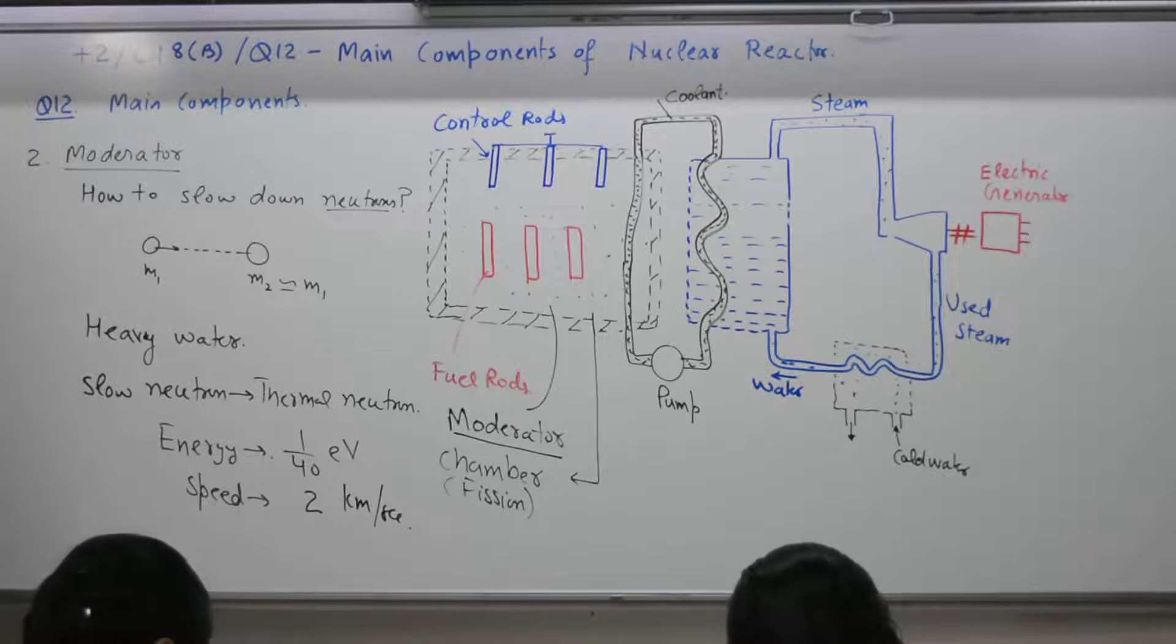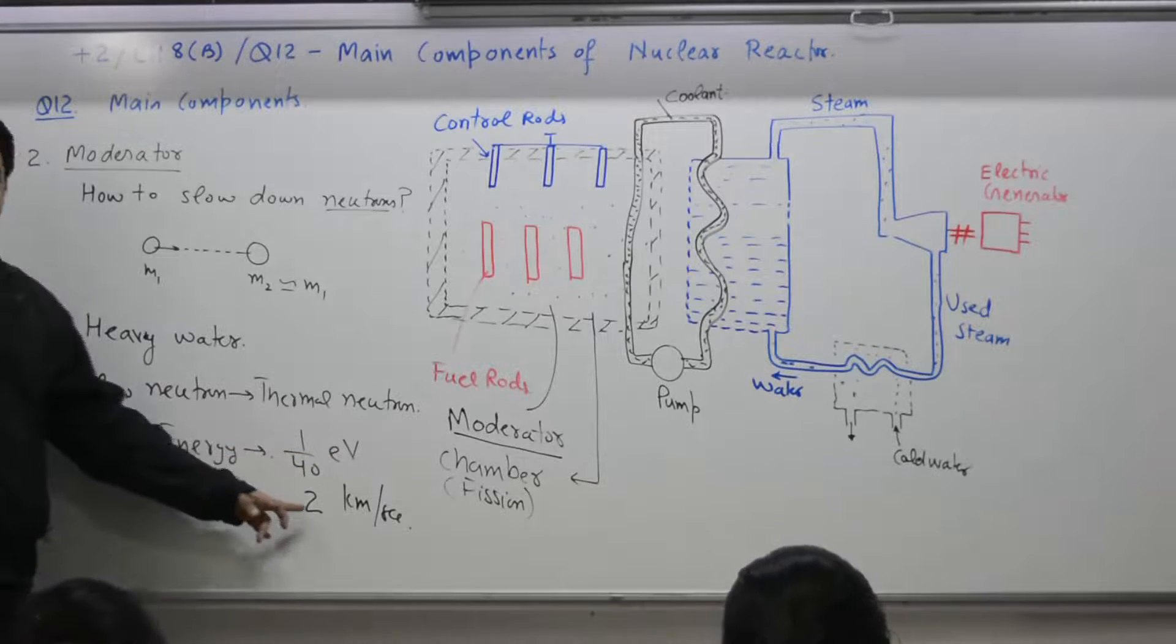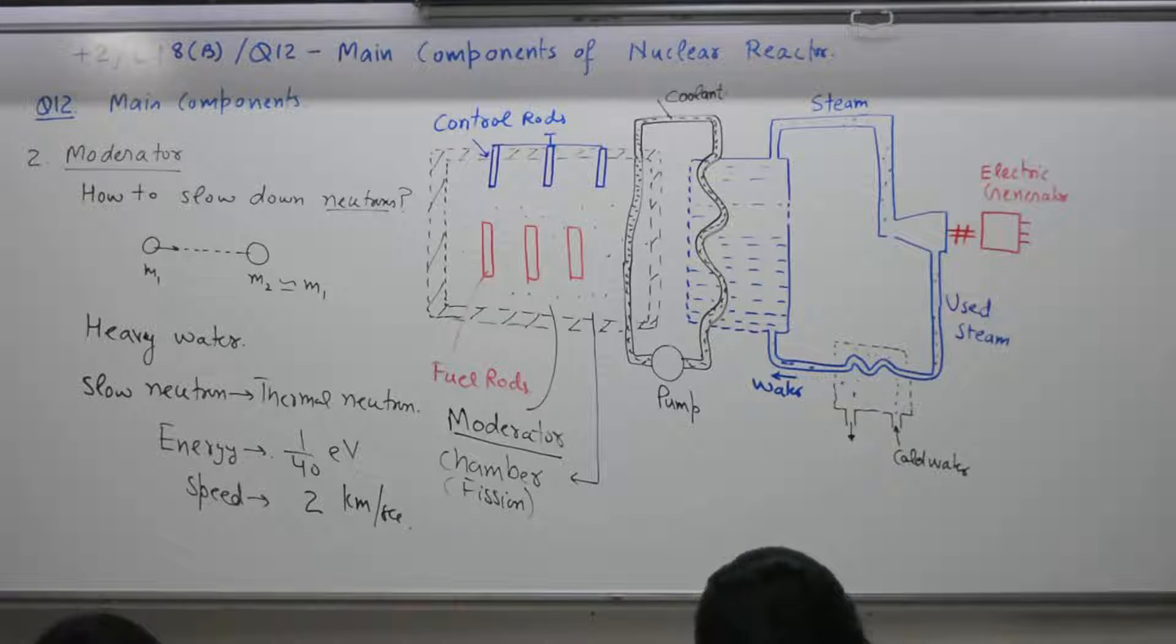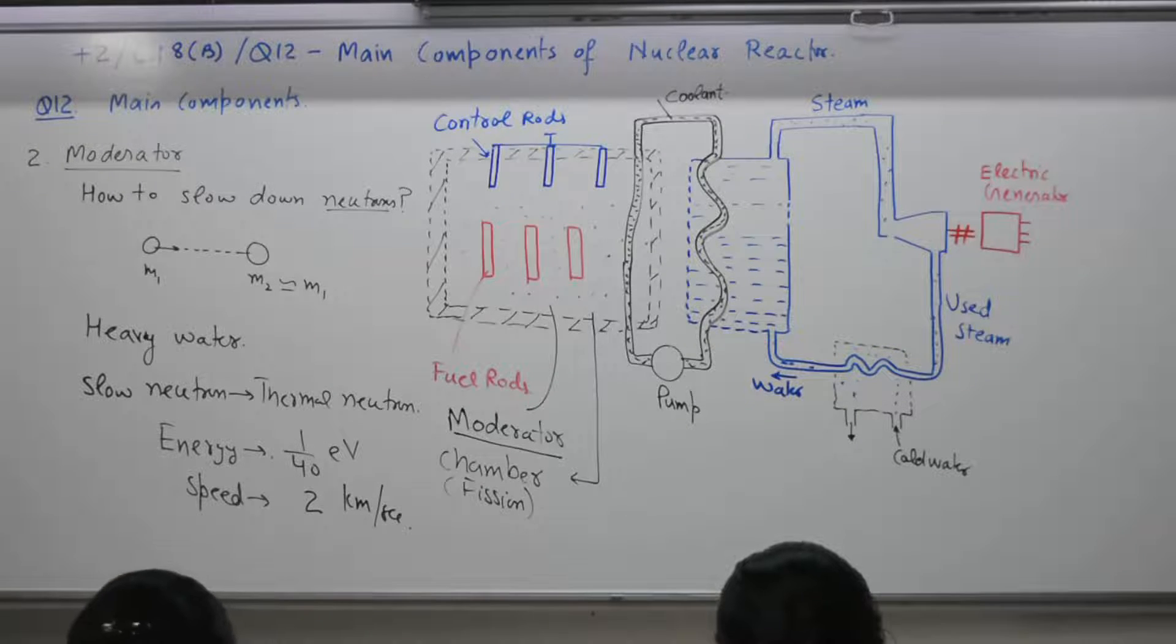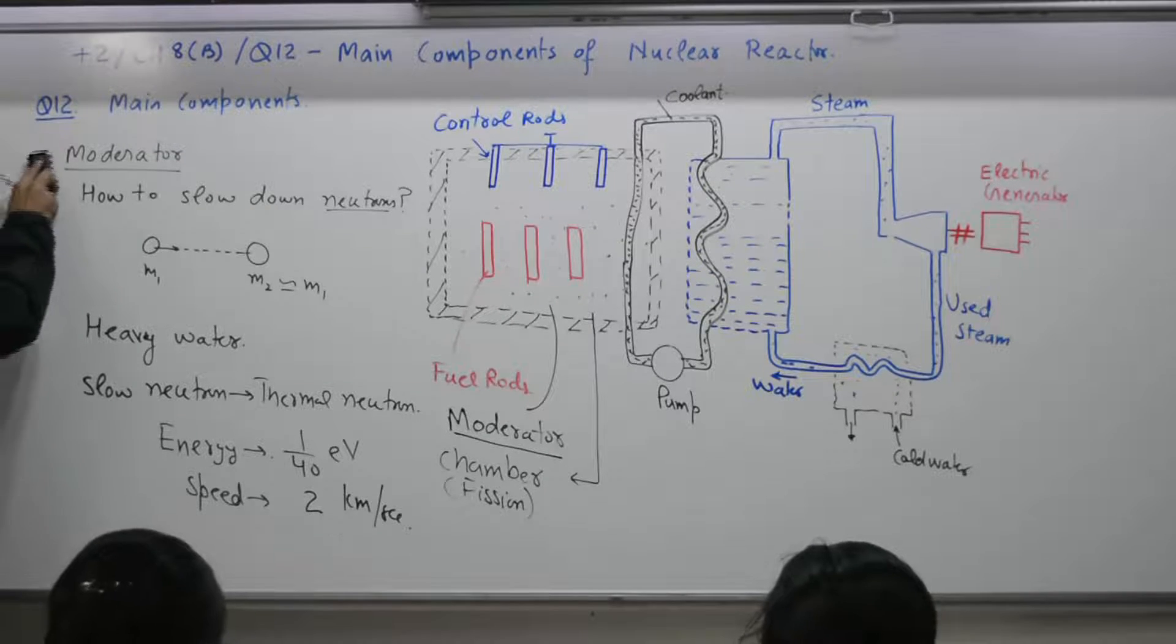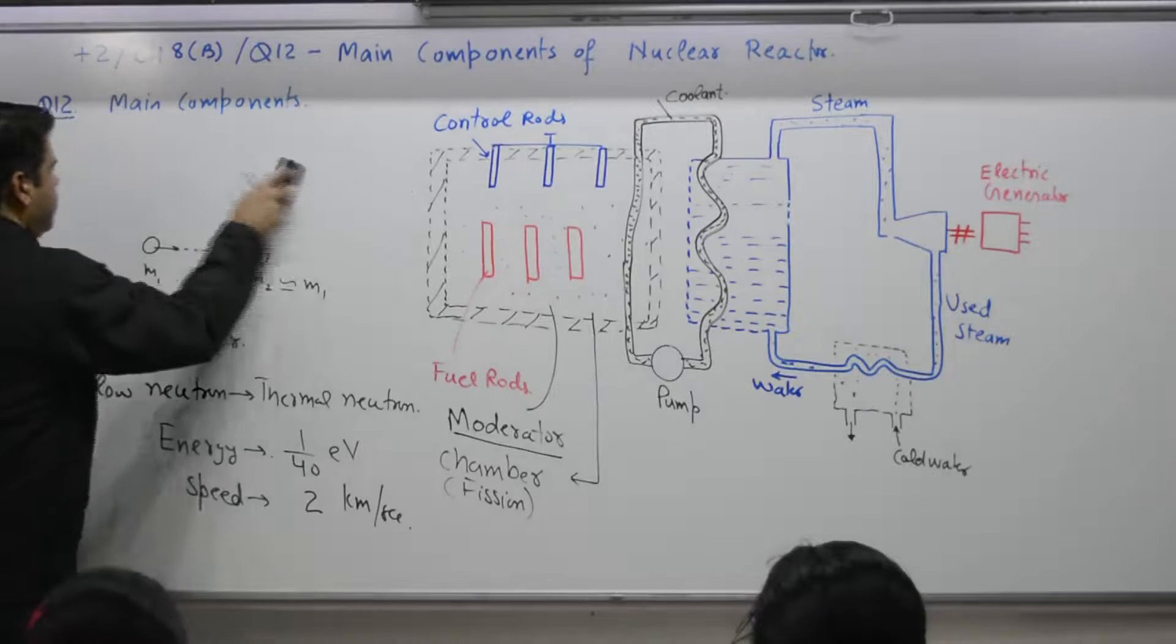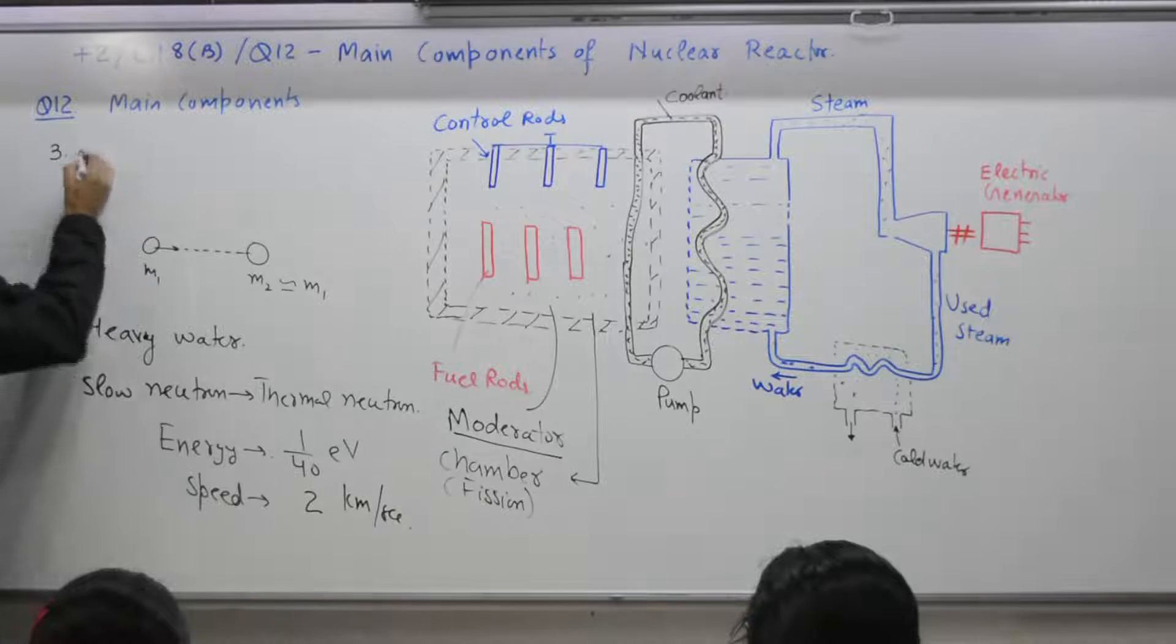1 minute to pen down. Objective questions. Energy fraction of electron volt. Speed few kilometer per second. 3 is what? Yes. Control rods.